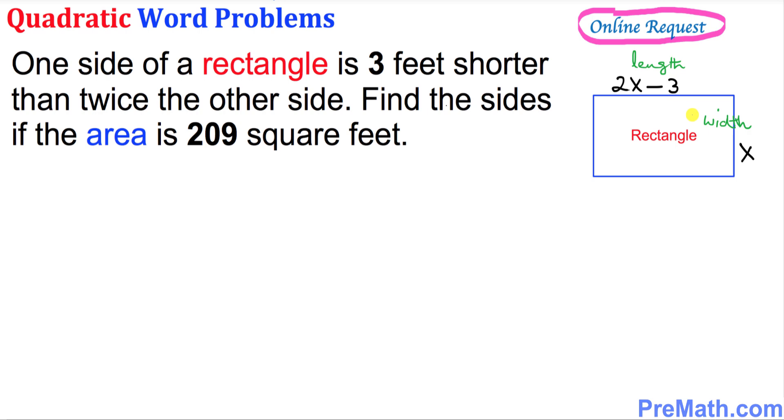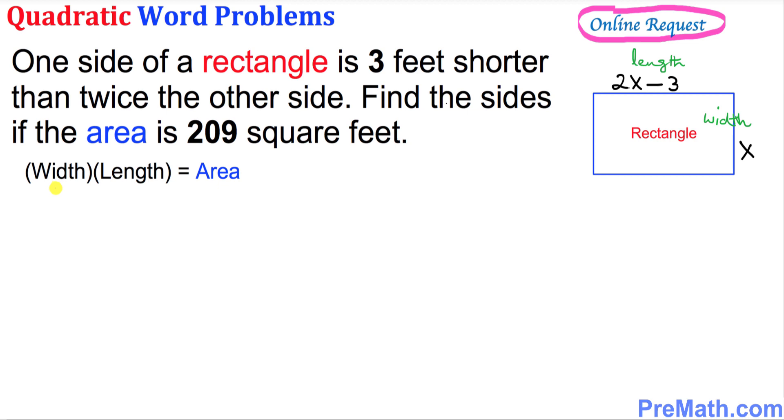Thus the width turns out to be x feet and the length is going to be 2x minus 3 feet. And one more thing we know that the area is always equal to width times length.